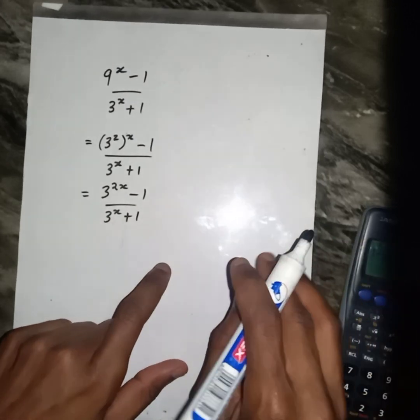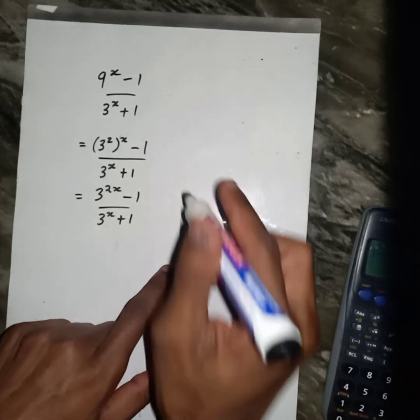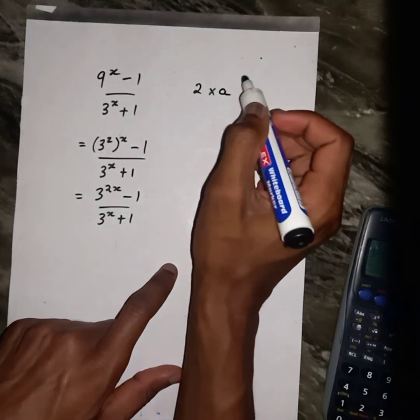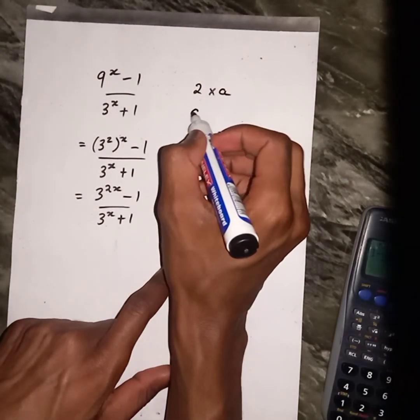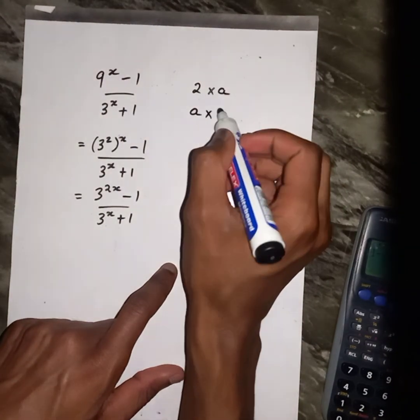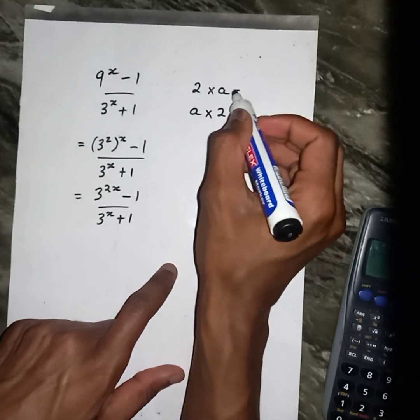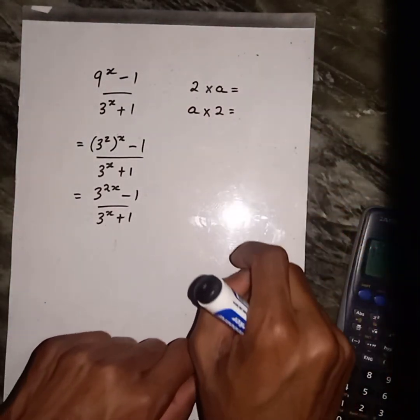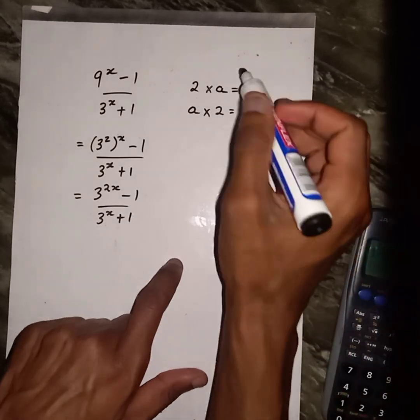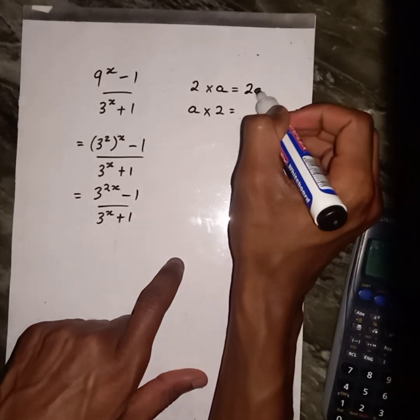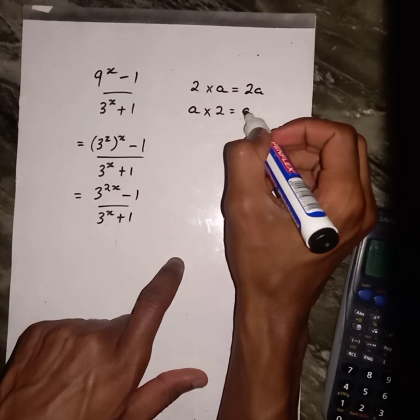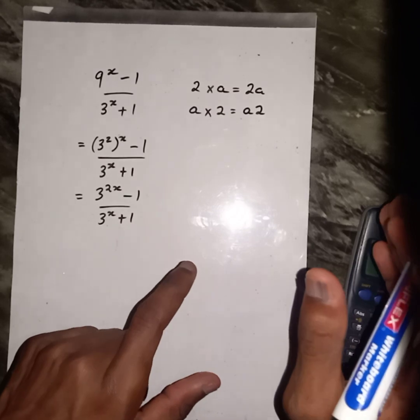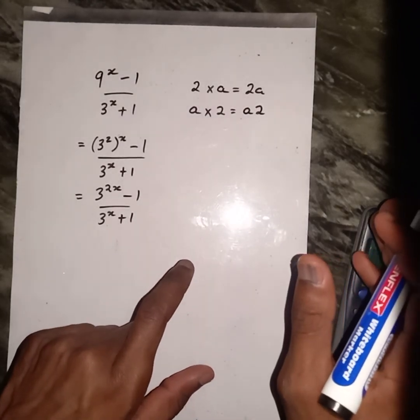If I were to ask you this question, if I have 2 multiplied by A, then I decide to say A multiplied by 2. What is going to be the answer of this? You are still fine if you say 2A or A2. These two things, they are the same.